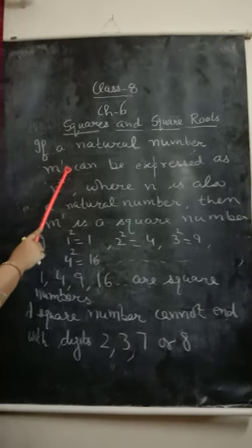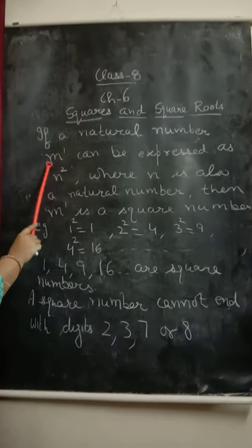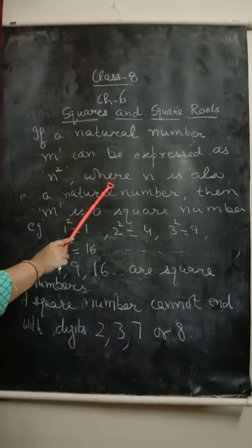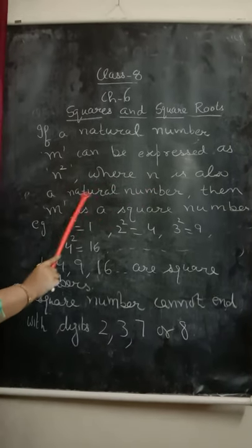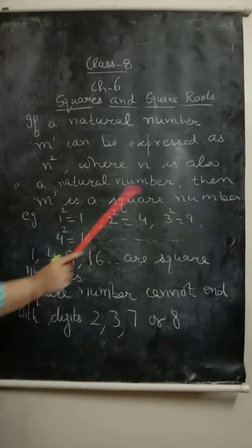Let us understand the meaning of square numbers. If a natural number M can be expressed as N square, where N is also a natural number, then M is a square number.